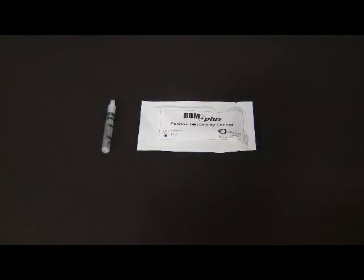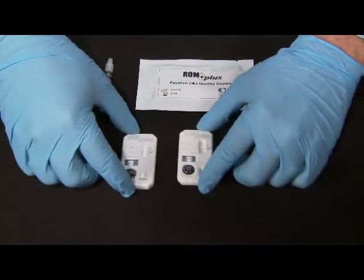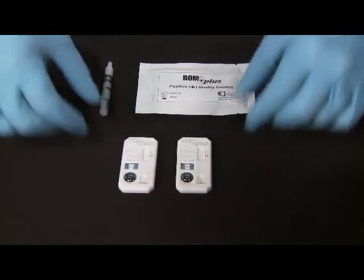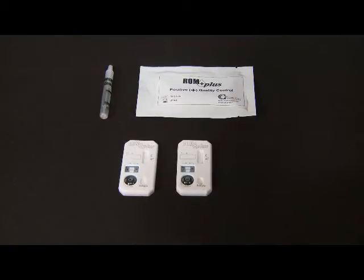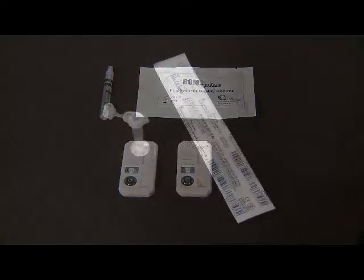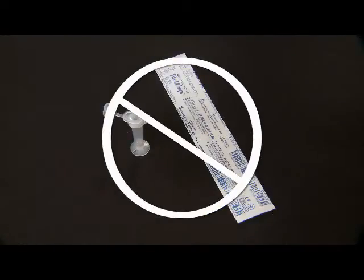To perform the quality control test, prepare two ROM Plus cassettes, one for the positive control and the other for the negative control. Since this is a quality control test and a human sample is not required, the vaginal swab and standard dropper vial from the ROM Plus test kit should not be used.